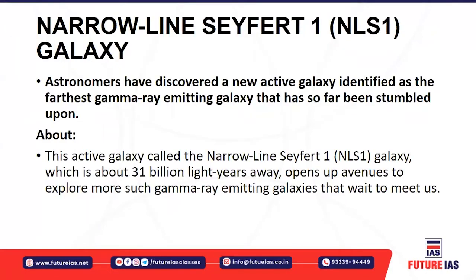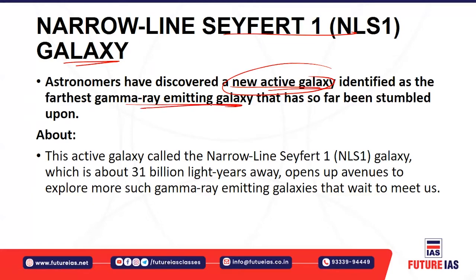Next, the Narrow Line Seyfert 1 — NLS1 — galaxy. Astronomers have discovered a new active galaxy in our universe. This new active galaxy has been identified as a gamma-ray emitting galaxy. This active galaxy, called the Narrow Line Seyfert 1 (NLS1) galaxy, is around 31 billion light years away from us, and it opens avenues for the exploration of this gamma-ray emitting galaxy.